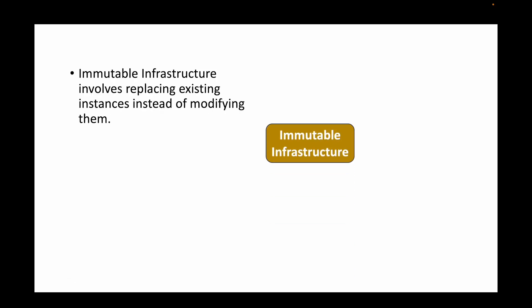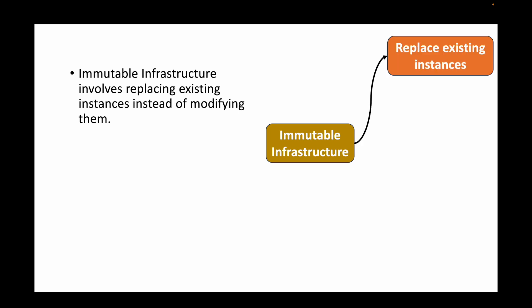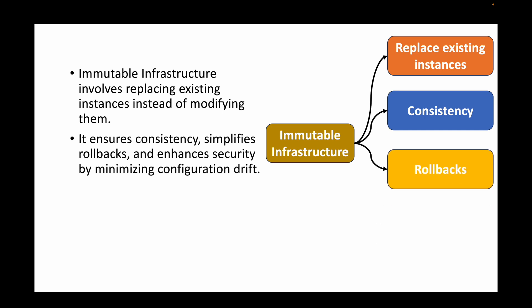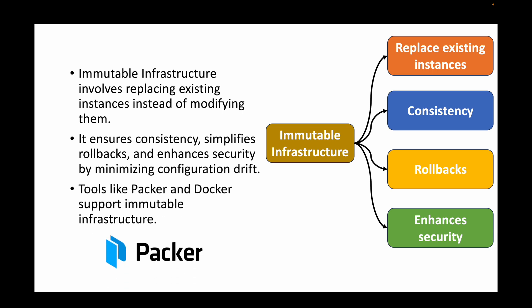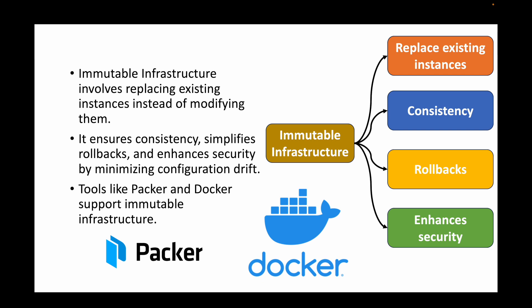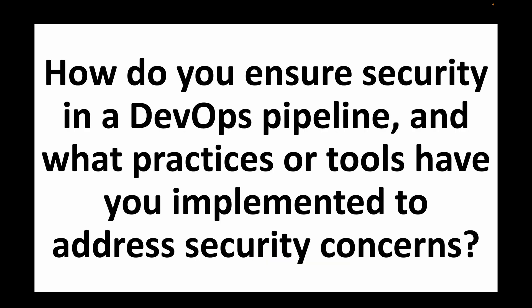The next question is: explain the concept of immutable infrastructure and its advantages in a DevOps environment. Immutable infrastructure means replacing existing infrastructure instead of modifying it. For example, instead of modifying a container where an application is running, we simply replace it with an updated container. This maintains consistency, simplifies rollbacks, and enhances security by minimizing configuration drift. Tools like Packer and Docker support immutable infrastructure, where we replace instances rather than modify existing ones.